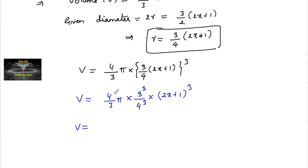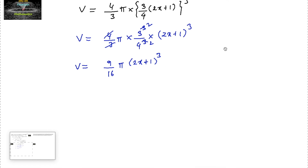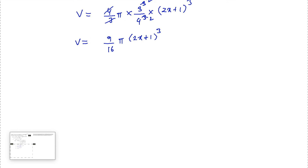Simplifying: the 4 and one factor cancel, and 3 also partially cancels, giving 3² = 9. So V = (9/16)π(2x + 1)³. Now let's differentiate V with respect to x.